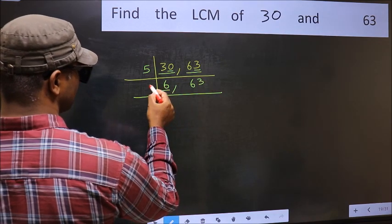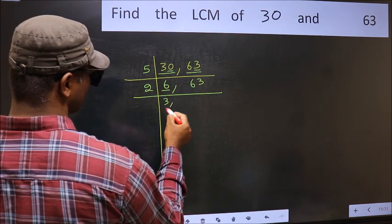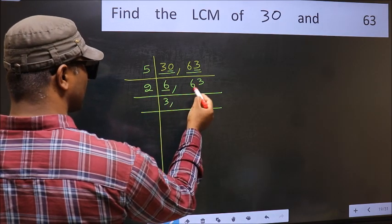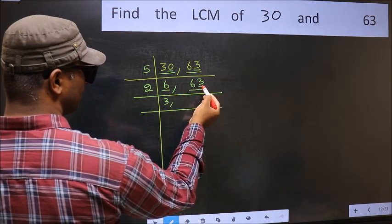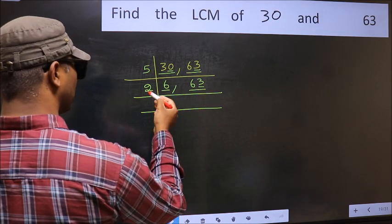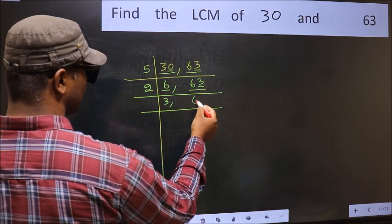Now here we have 6. 6 is 2, 3, 6. The other number, 63. Last digit 3, not even, so this is not divisible by 2. So you write it down as it is.